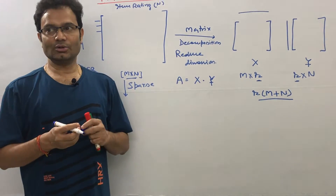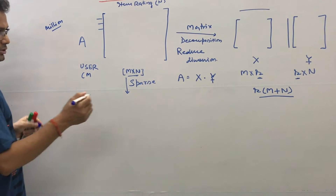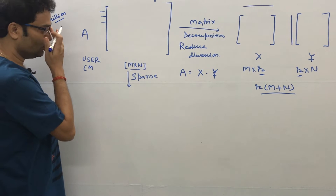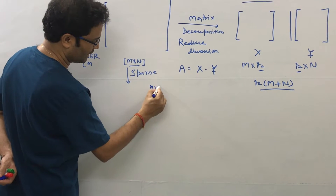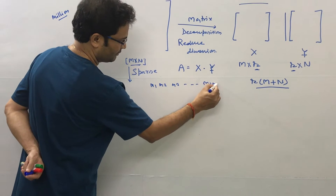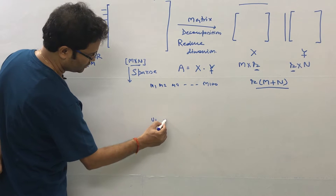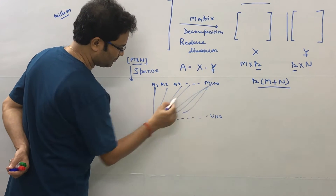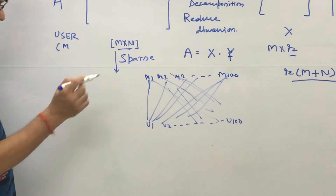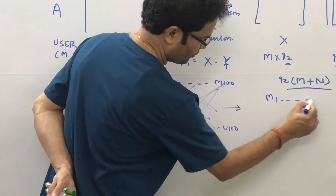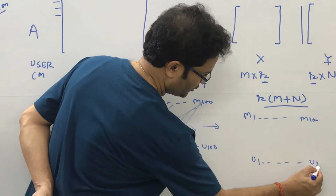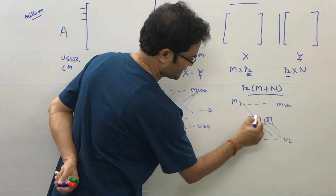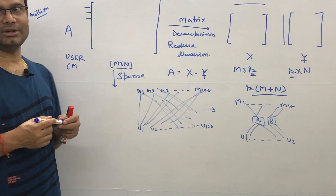But how does it work? Think about this: if you have movies M1, M2, M3 up to M100, and users user 1, user 2, up to user 100 — if you want to connect all users to all products, you can imagine how many connections there would be. The best solution is to decompose it and in between put some latent factors R1, R2, and so on. Then the number of connections is reduced, making computation much easier.